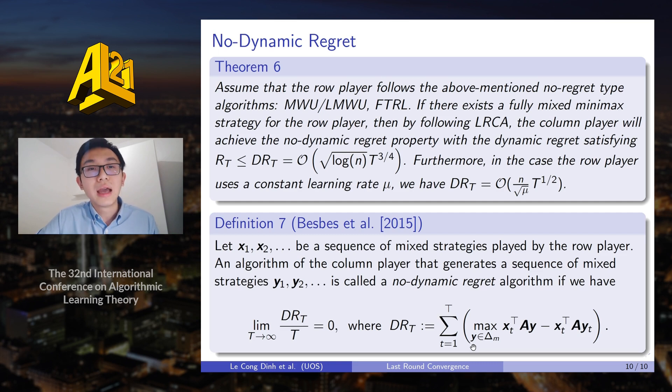However, in the case that the row player gives constant learning rate mu, then we achieve state-of-the-art dynamic regret of T to the power of 1 over 2. Note that dynamic regret is a much stronger concept compared to external regret, when instead of comparing with the best fixed strategy in the hindsight, we compare with the best strategy in each round. So dynamic regret is a much stronger concept compared to external regret, and thus the regret we achieve by following LRCA is actually much stronger.